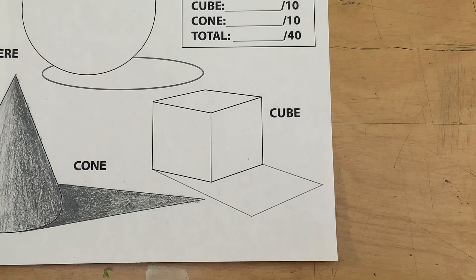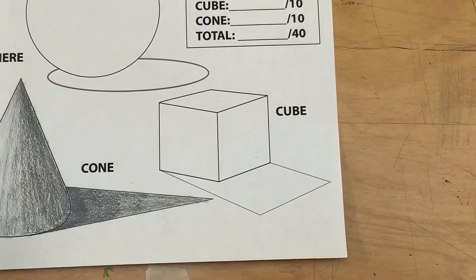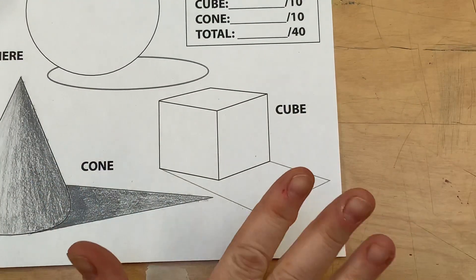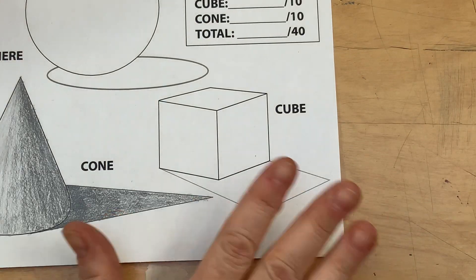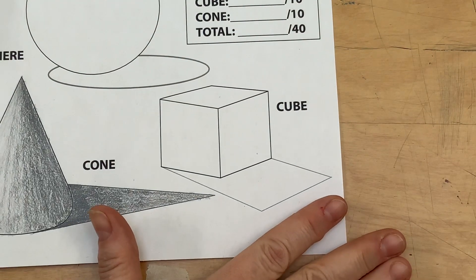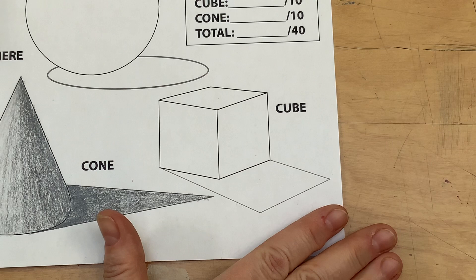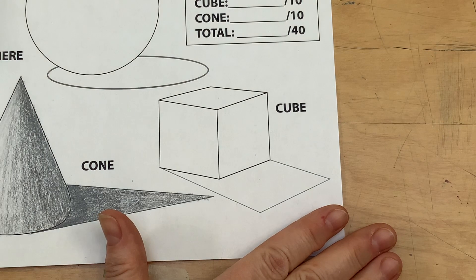Now let's do our cube, our two-point cube. Again, we're going to work with something very simple here. There's not a whole lot of fading from one color to another or value to another. If we do, it's very, very subtle.